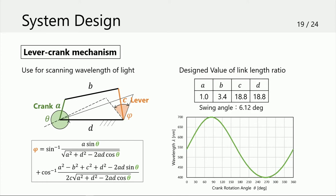Swing motion of the concave diffraction grating is necessary to scan wavelengths of light at high speed. In the proposed method, a labor-crank mechanism is used to realize it. The swing motion of link C as the labor is obtained by the simple rotating motion of link A as the crank. We designed the link length ratio to obtain the necessary swing angle of 6.12 degrees. The crank needs to rotate at 60 Hz, the same as the refresh rate of the display.